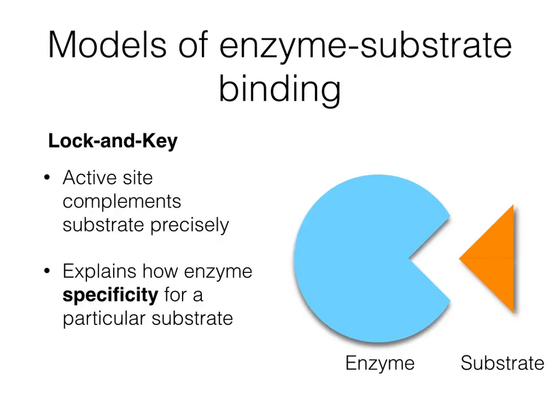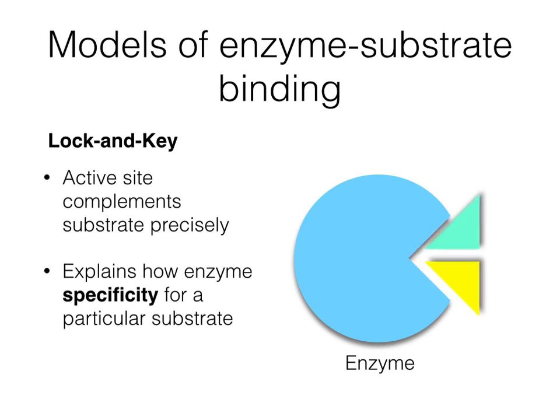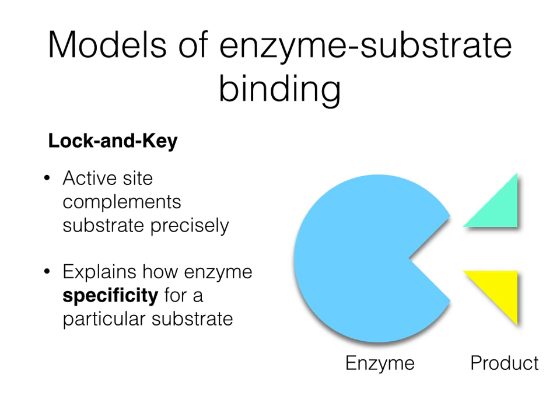When enzymes bind to the substrate, there are two models used to illustrate the process. The older one is called the lock and key model. In this model, the active site complements the substrate precisely — no conformational change is necessary. This explains one important characteristic of an enzyme called specificity. However, there is a limitation: this theory implies that the enzyme is a rigid molecule, which is not always the case. It also implies that enzymes can only act on one substrate, which is also not always the case.